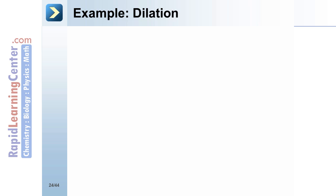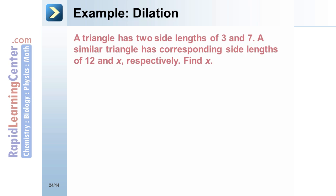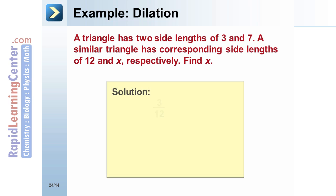Example: Dilation - A triangle has two side lengths of 3 and 7. A similar triangle has corresponding side lengths of 12 and x respectively. Find x. Solution: The known ratio of corresponding sides is 3 to 12. Set it equal